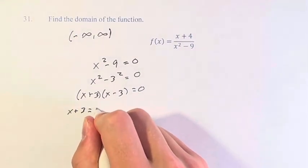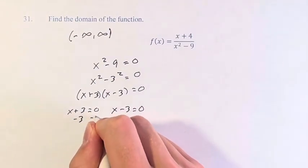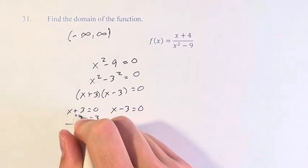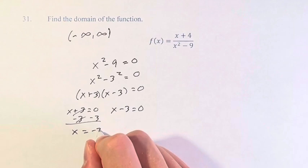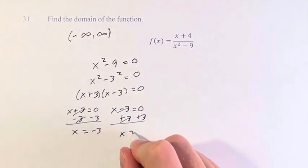Therefore, either x plus 3 equals 0 or x minus 3 equals 0. Subtracting 3 from all of these, these cancel. x is equal to negative 3. Or, solving on this side, x is equal to positive 3.